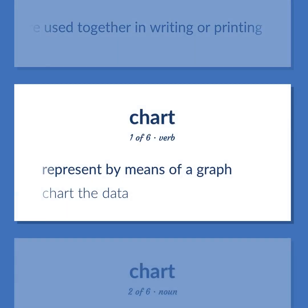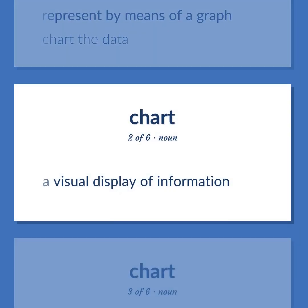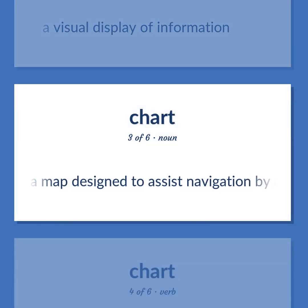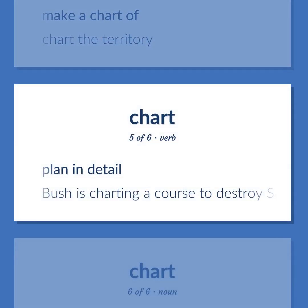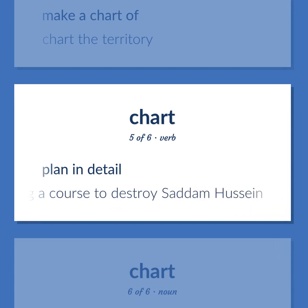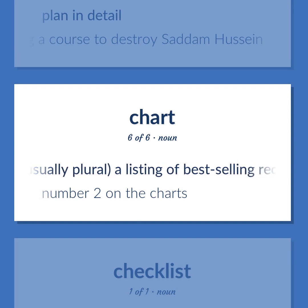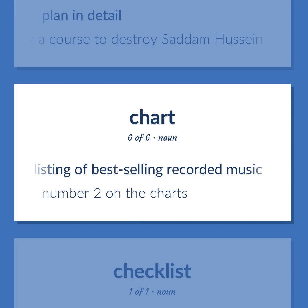Chart: Represent by means of a graph — 'Chart the data.' A visual display of information. A map designed to assist navigation by air or sea. Make a chart of — 'Chart the territory.' Plan in detail — 'Bush is charting a course to destroy Saddam Hussein.' Usually plural, a listing of best-selling recorded music — 'Number 2 on the charts.'